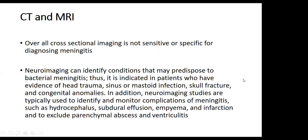MRI and CT findings: overall, cross-sectional imaging is not sensitive or specific for diagnosing meningitis. Neuroimaging can identify conditions that may predispose to bacterial meningitis, such as head trauma, sinus or mastoid infection, skull fracture, or congenital anomalies. Neuroimaging studies are also used to identify and monitor complications of meningitis such as hydrocephalus, subdural effusions, parenchymal infarctions, brain abscess, and ventriculitis.